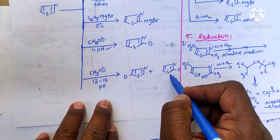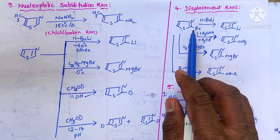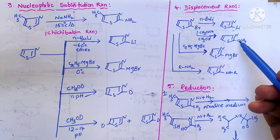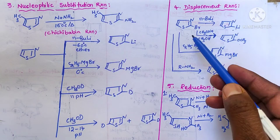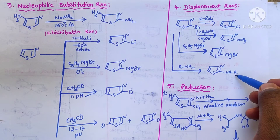Now we discuss displacement reactions. When 2-bromothiazole is treated with different reagents we get different products: with n-butyl lithium we get 2-lithio thiazole; with sodium methoxide we get 2-methoxy thiazole; with ethyl magnesium bromide we get 2-bromomagnesium thiazole; and with an amine we get N-alkyl 2-amino thiazole derivative.